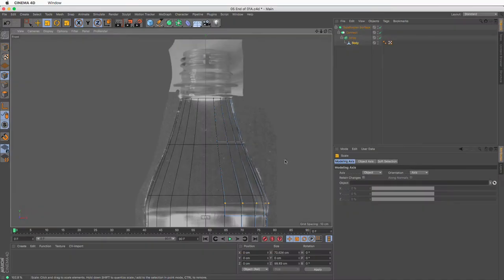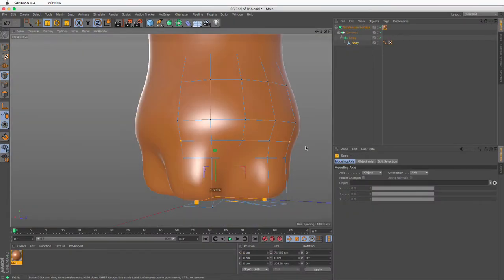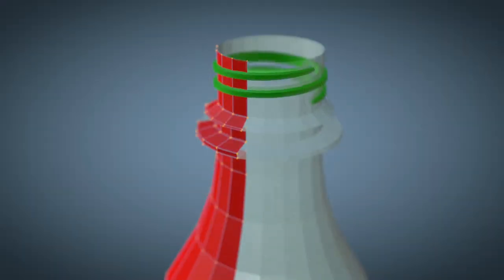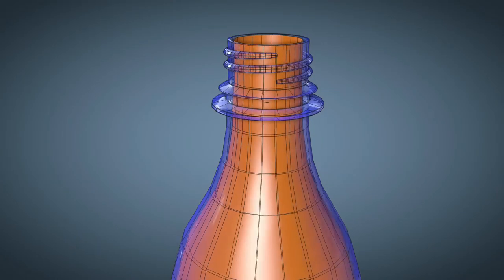Finally, by using all the above techniques we will move on to model the whole bottle including the finer details, cap, screw thread, and inside thickness.